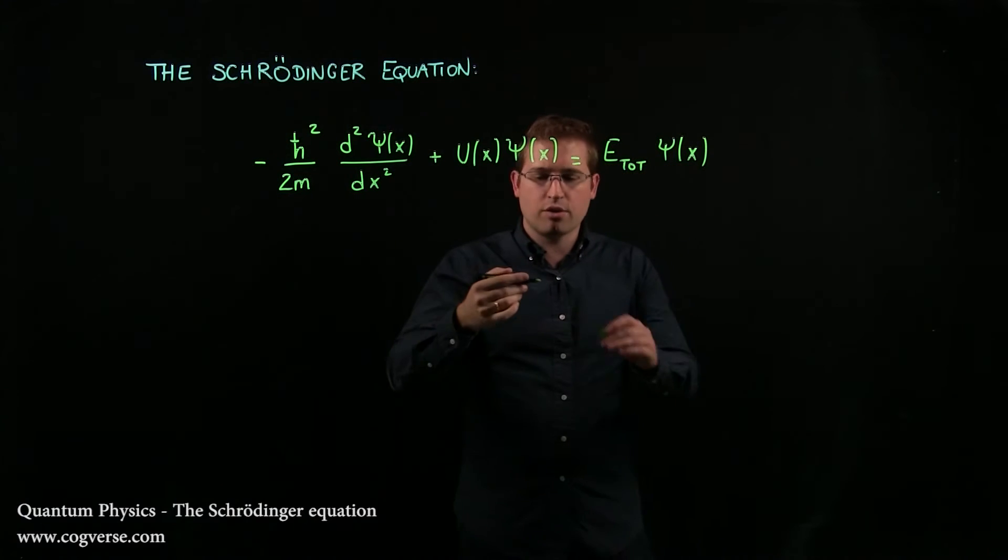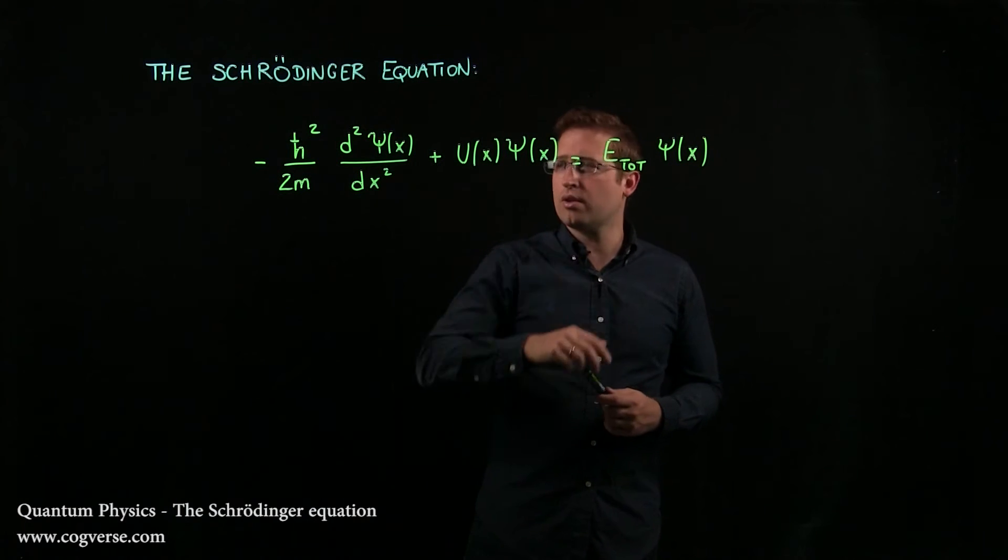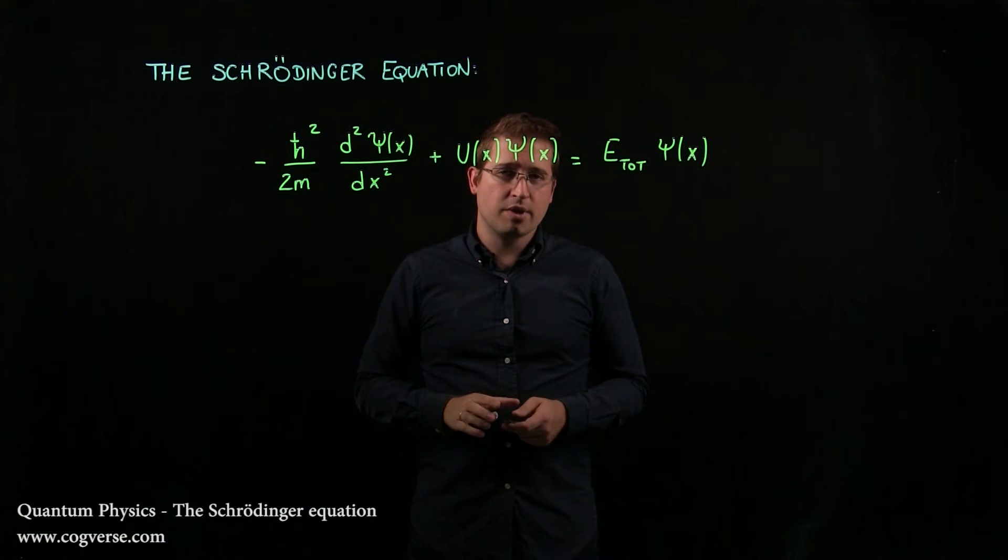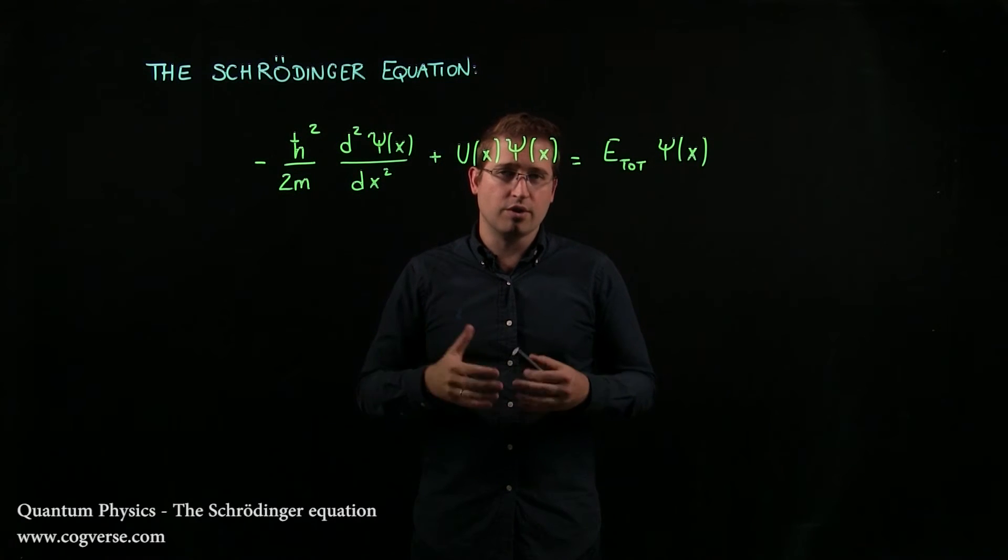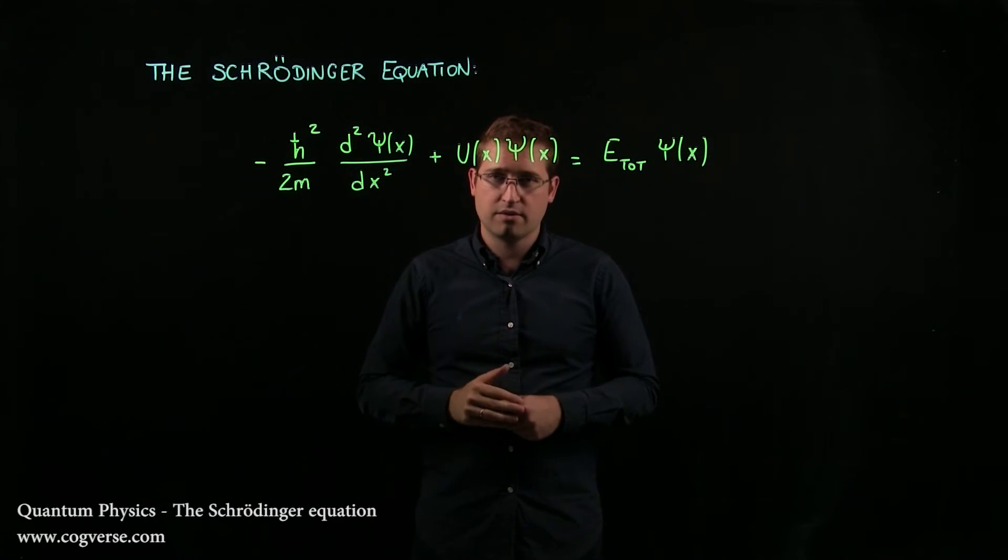U is the potential energy, E_total is the total energy, and ψ(x) is the time-independent wave function that is only a function of one variable x for position.